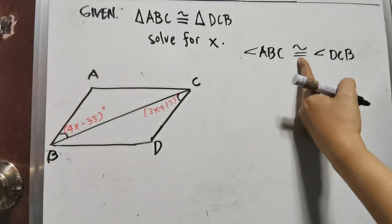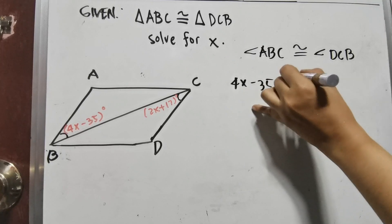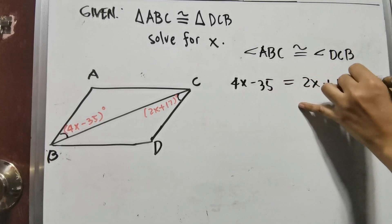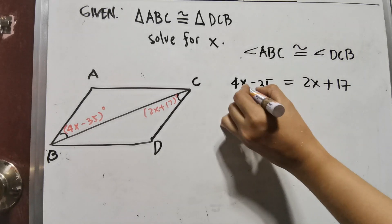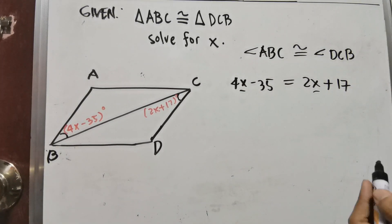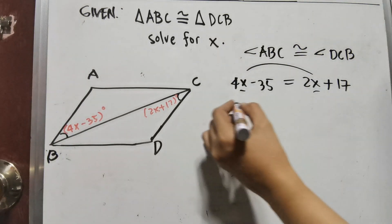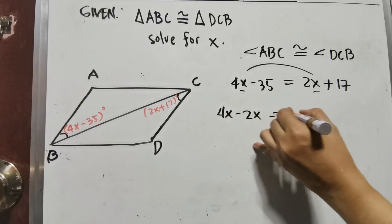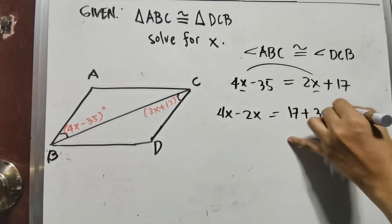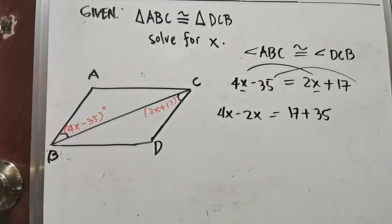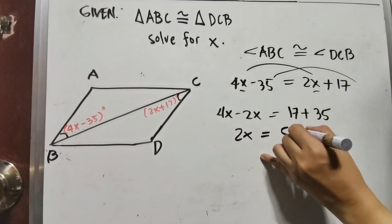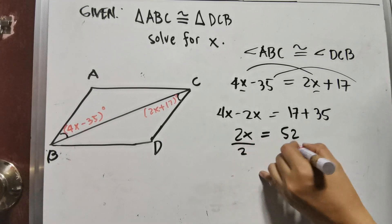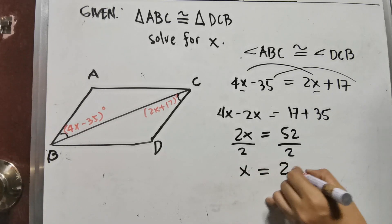Since they are congruent, 4X minus 35 is equal to 2X plus 17. To solve for X, using the addition property of equality, combine like terms: 4X minus 2X equals 17 plus 35. Simplify: 2X equals 52. Divide both sides by 2, so X equals 26.